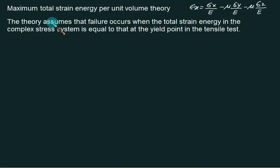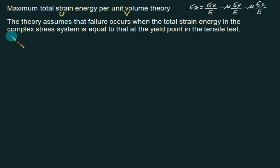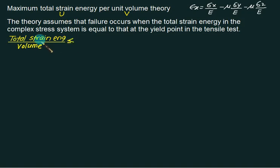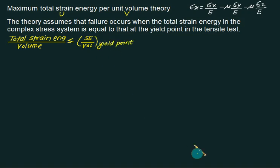According to the Maximum Total Strain Energy Theory, the maximum total strain energy per unit volume — represented as U/V (strain energy density) — must be less than or equal to the strain energy stored at the yield point. So we equate total strain per unit volume to the corresponding strain energy at the yield point.